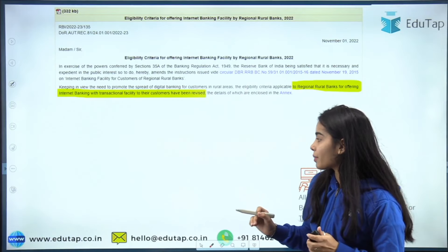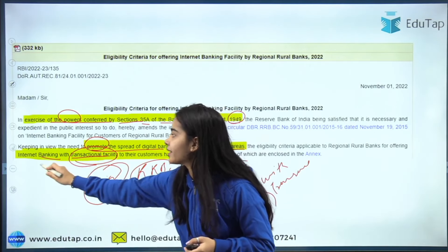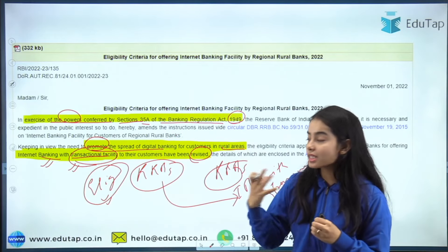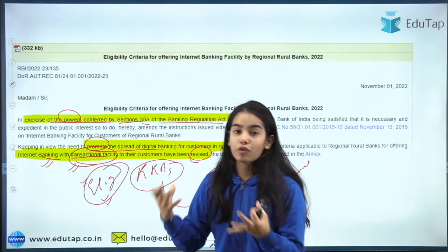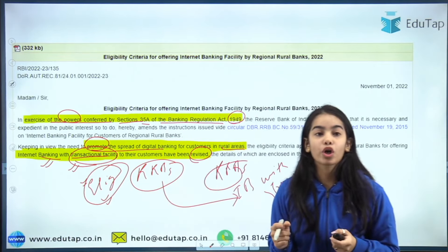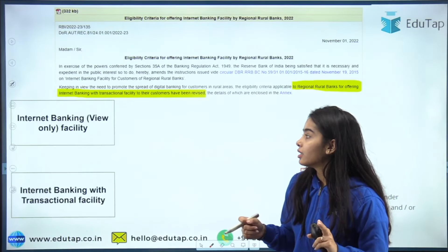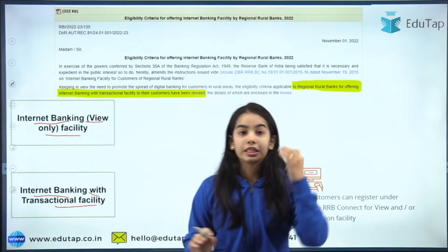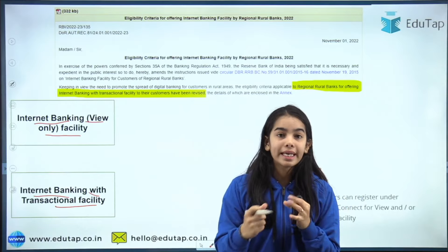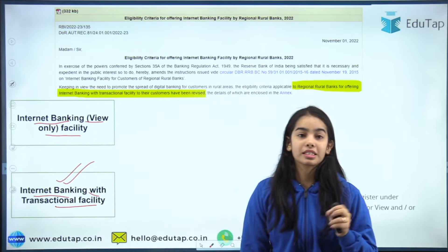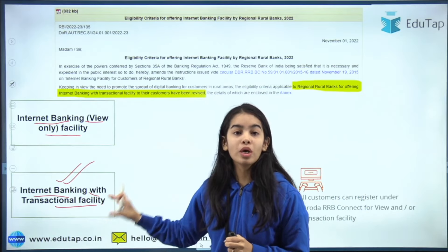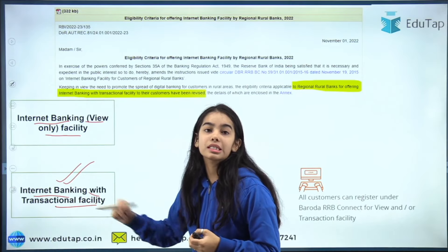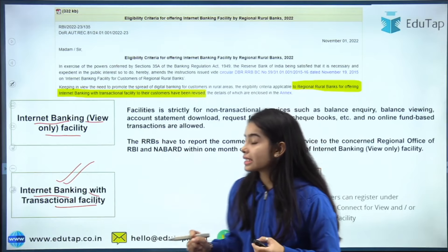There are two types of internet banking: first, internet banking view-only facility, and second, internet banking with transactional facility. The revision in the eligibility criteria is specifically regarding the internet banking with transactional facility. Let's understand what these two are and why the revision has come only for the transactional category.